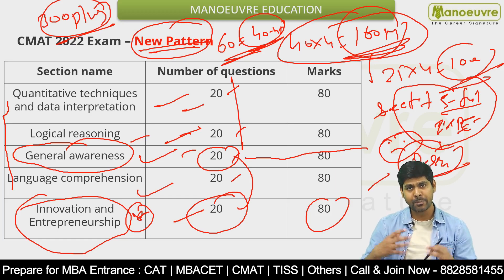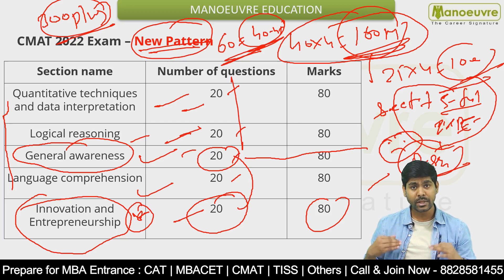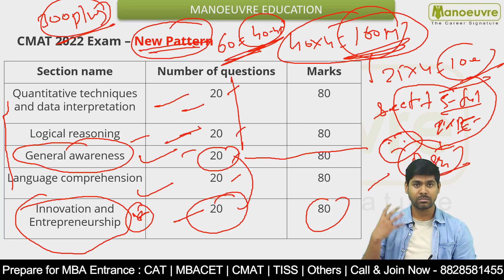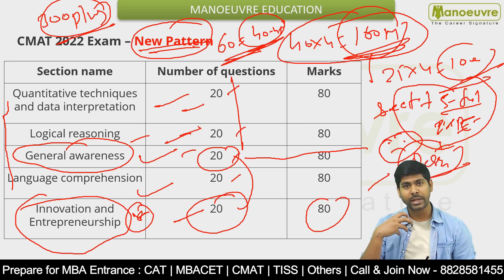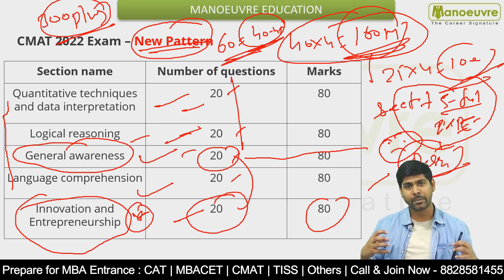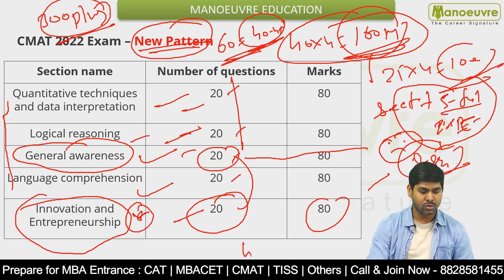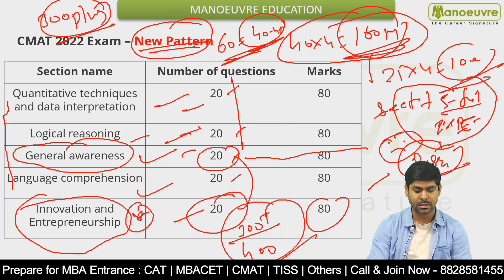And this year there is a new section added — Innovation and Entrepreneurship — so we will prepare it. Although it is the first time they have made it compulsory, so it is not that tough. But we still have to prepare for all possibilities. So out of 400, our score target has to be 300 plus.